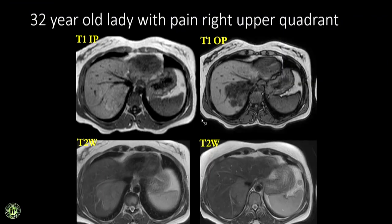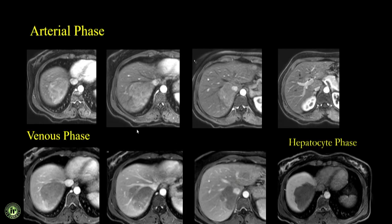In a 32-year-old lady with pain in the right upper quadrant, the in-and-out-of-phase sequence — which is a very important sequence in liver imaging and must always be part of your routine protocol — shows a lesion behind the right hepatic vein. On the out-of-phase image this shows a very marked signal drop. It is mildly hyperintense on T2-weighted imaging, and when you inject contrast there is arterial enhancement with washout in the venous phase. In the hepatocyte phase it is hypointense compared to background liver.